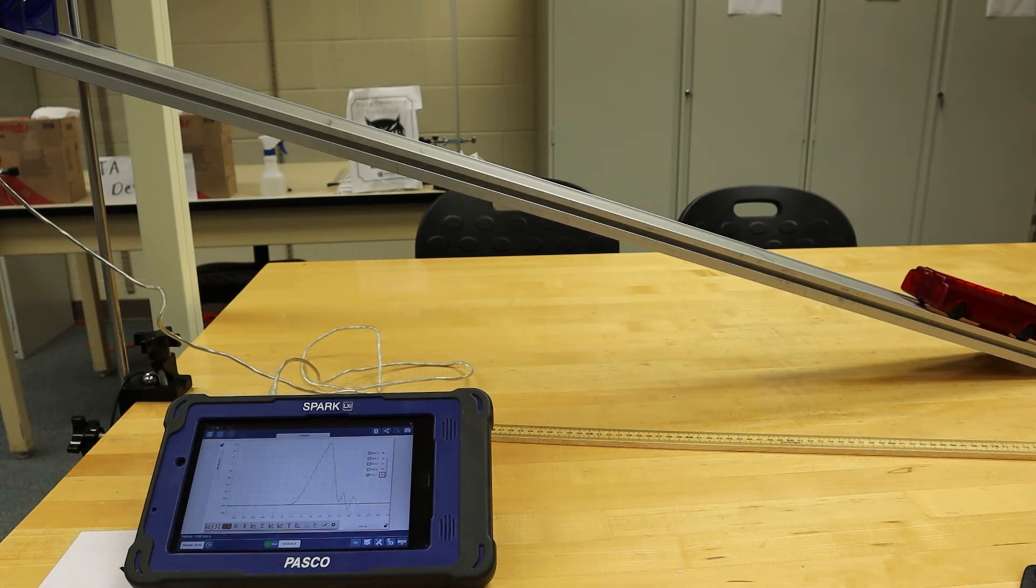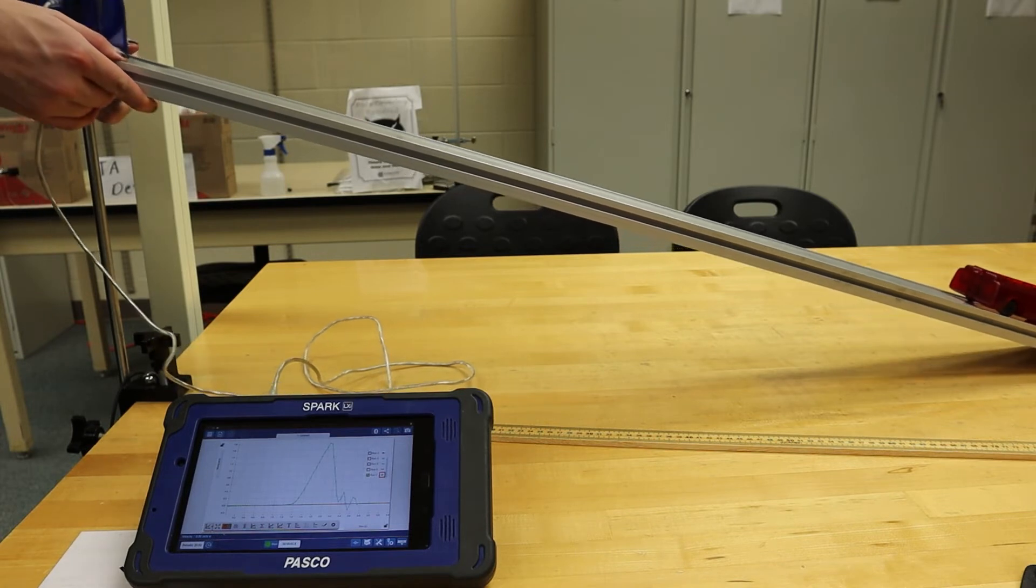Once we have all the necessary data, we will remove our track from the rod to continue with Procedure B.